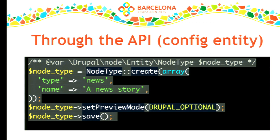How would I create a node type? Using the NodeType class, there's a static helper to create such objects. You call create with a type of news and a news story label, and because each configuration entity has its own class, there are methods to manage what that config entity does. So if I want to set the preview mode to DRUPAL_OPTIONAL so when saving that node type it says you can preview but don't have to — that's what that would do. Then I save it and it exists on the system.